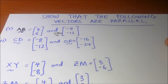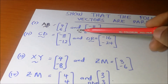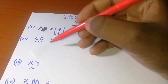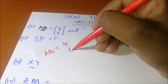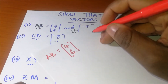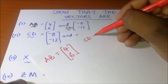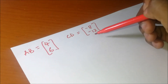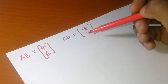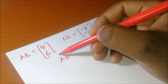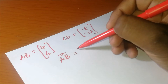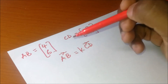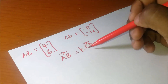Let's do some examples. We are being asked to show that the following vectors are parallel. We have vector AB and vector CD. Vector AB is (4, 6) and vector CD is (-8, -12). We are required to show that these two vectors are parallel. To do so, we express one vector as a scalar multiple of the other — we say vector AB is equal to K times CD, and we find the value of K.